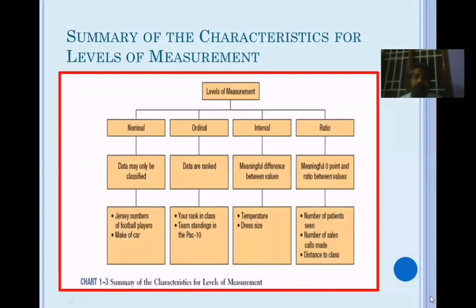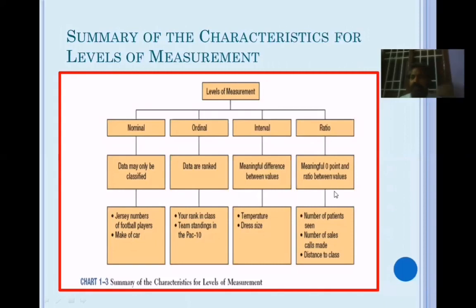To summarize the levels of measurement: nominal data can only be classified; ordinal data can be ranked; interval data has meaningful differences between values but no true zero point; and ratio data has a meaningful zero point. These are the four levels of measurement.